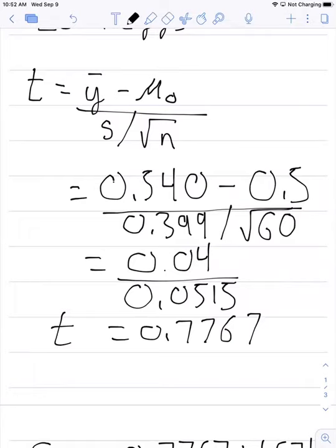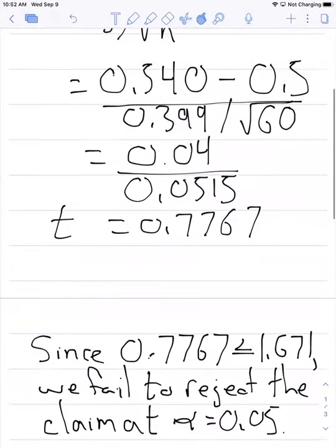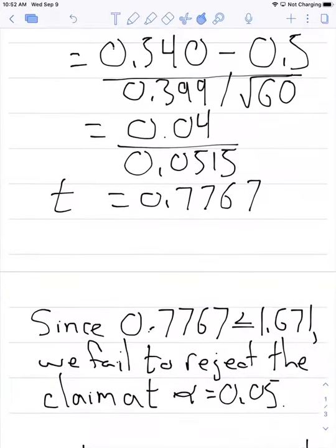Now what does this mean? Now we can go and look up at the t table to see what our results are. When we do that, we're going to compare our value 0.7767, which we just found, with the value from the t table.